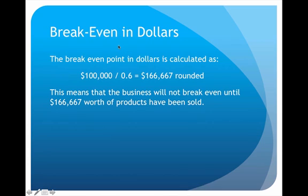We can also express the break-even point in dollars using a slight variation of the same formula. Using the fixed costs of $100,000 divided by the contribution margin ratio of 0.6, we get approximately $166,667. Until they have sold that amount of product, they will not break even.